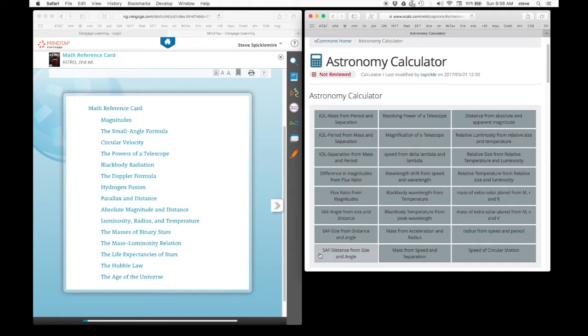I've added another calculator to the small angle formula. So now there are three variables in the small angle formula and there are three calculators depending on which variable you need to solve for, similar to the Kepler's third law. There's three variables in Kepler's third law and there's three calculators depending on which one you need to solve for.